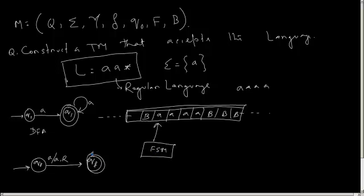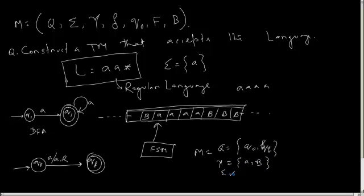So this is the Turing machine form for this language. You can write that my Turing machine M will be defined as follows: Q will be two states, that is Q0 and QF. My tape alphabets are A and B. My sigma is simply A. And my transition function is defined as delta of Q0 comma A.